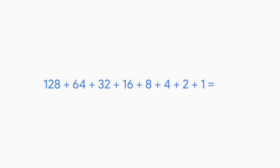Let's consider these numbers: 128, 64, 32, 16, 8, 4, 2, and 1. What patterns do you see? Hopefully, you'll see that each number is a double of the previous number going right to left. What happens if you add them all up? You get 255.